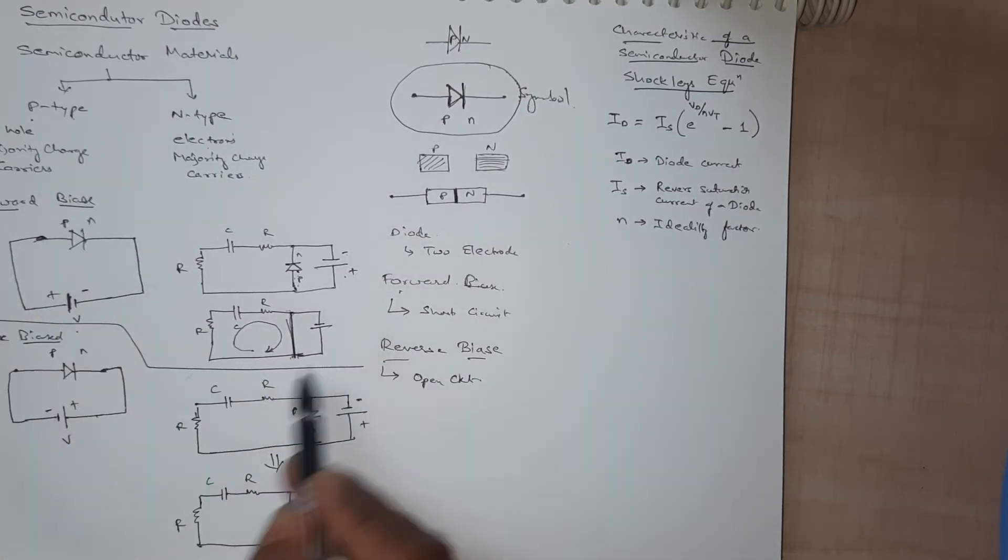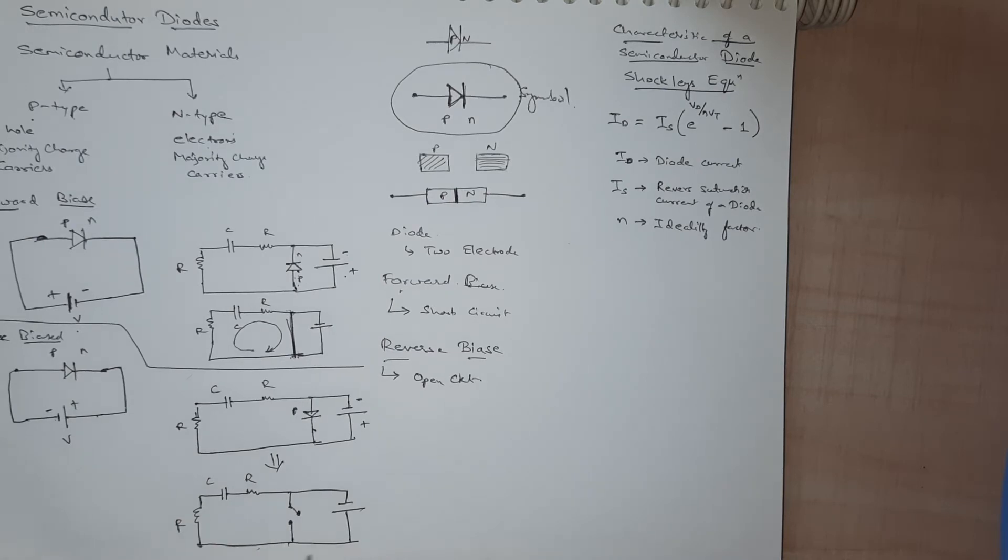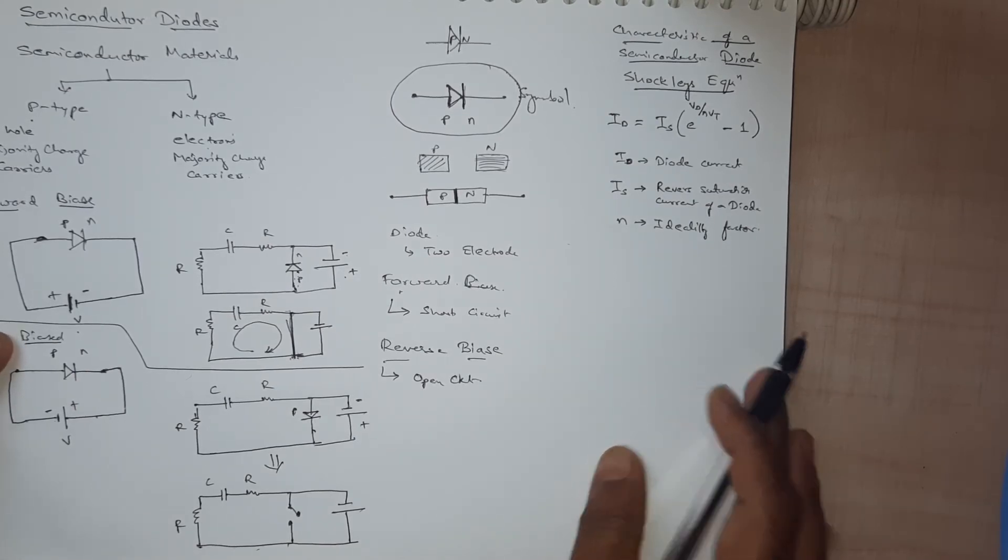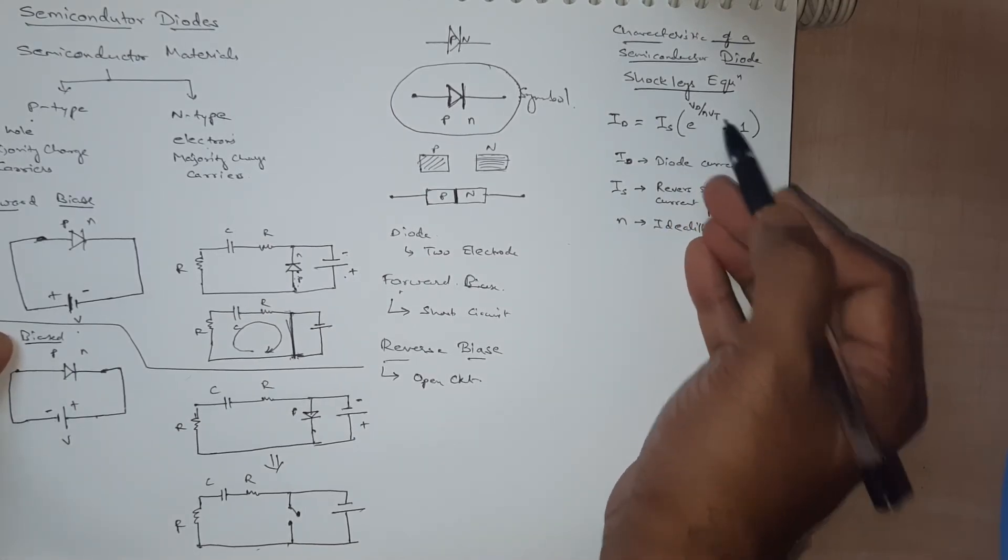This is forward bias and this is reverse bias. This small leakage current when it is in reverse bias is called reverse saturation current.